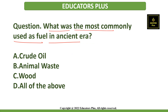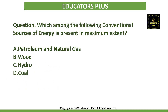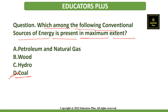The next question: What was the most commonly used fuel in the ancient era? The correct answer is option C — wood — as wood was the most commonly used fuel from ancient times. The next question: Which among the following conventional sources of energy is present in maximum extent? The correct answer is option D — coal — as coal has the largest proportion among all conventional sources of energy.